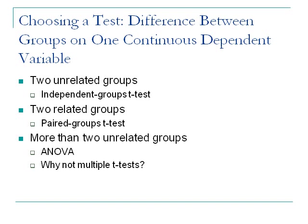So if you do ANOVA — which you have to do if you have more than two groups — you have to follow it up with post-hoc tests, pairwise comparisons.